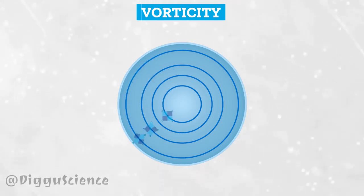Mathematically, vorticity can be calculated through the equation zeta is equal to the curl of the velocity field, where vector v is the fluid velocity field.